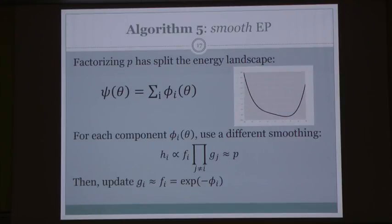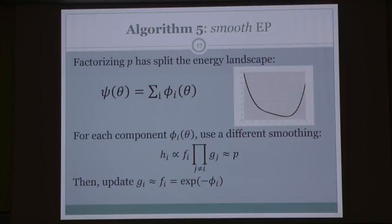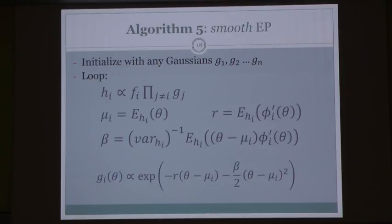I'm going to provide an alternative to this classical algorithm based on the idea of smooth gradient descent. Factorizing p splits the energy landscape psi into additive components. For each component phi_i, I reuse algorithm number 3 with the hybrid h_i as the smoothing function — computing the minimum of the alpha divergence — and this gives a new Gaussian approximation g_i. This is algorithm number 5.